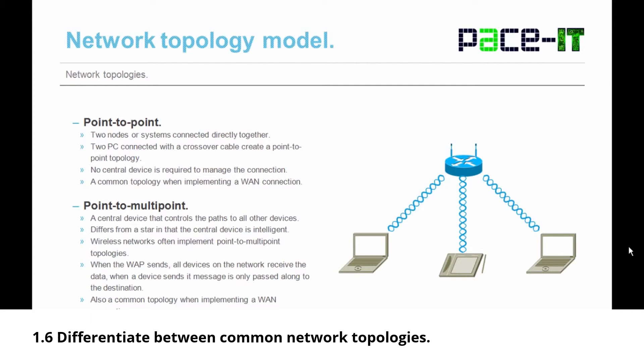Next is the point-to-point topology, where two nodes or systems are connected directly together. If you're talking about two PCs, they use a crossover cable to create a point-to-point topology — there's no central device to manage the connection. This is still a common topology when implemented across a WAN connection utilizing a T1 line.